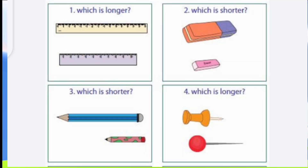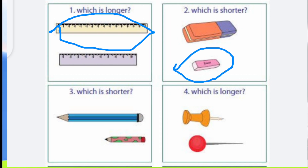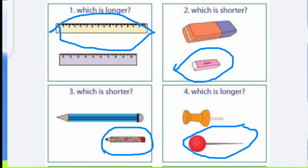Which is longer? This scale is longer. Which is shorter? This is shorter. Which is shorter? This is shorter. Which is longer? This bit is longer.